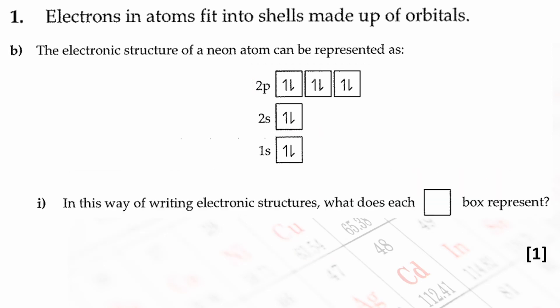Here's the question. In this way of writing electron structures, what does each box represent? Each box represents an orbital. I should also mention that each arrow represents an electron. Single or double-headed arrows can be used. Single-headed arrows have been shown here.